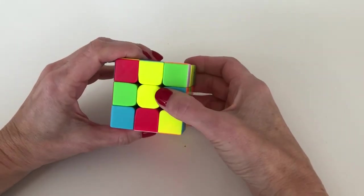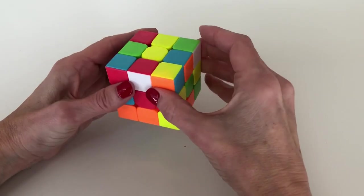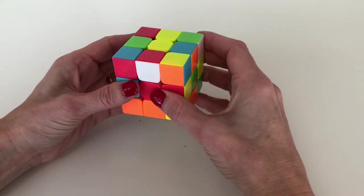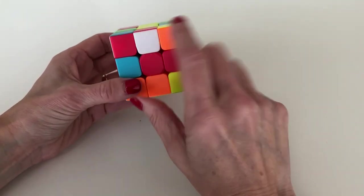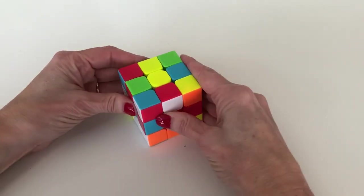Okay, so making the daisy, what we're going to want to do is first put the yellow center piece on top, and then we're going to look around the cube for the white edge pieces. The white edge pieces can be in five different places.